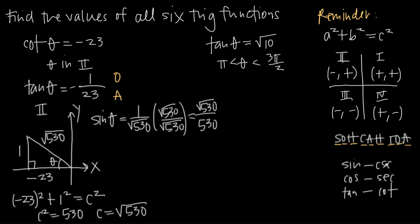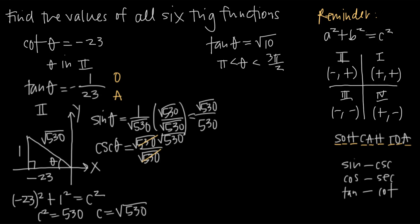Cosecant of theta is just the reciprocal of sine, so we flip root 530 over 530 to get 530 over root 530. Remembering that 530 equals root 530 times root 530, we cancel one factor from numerator and denominator and are left with square root 530.